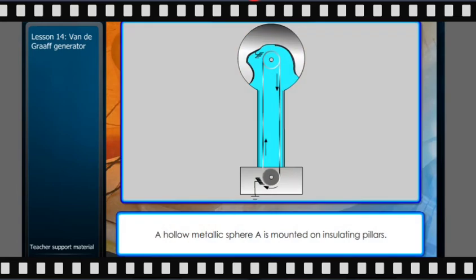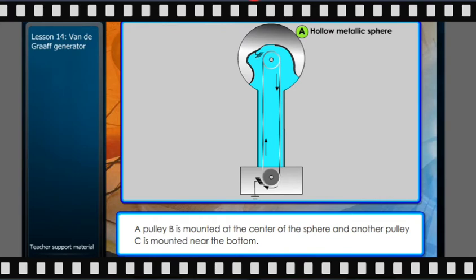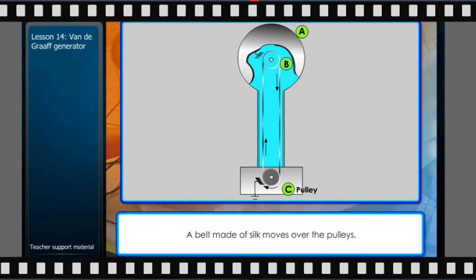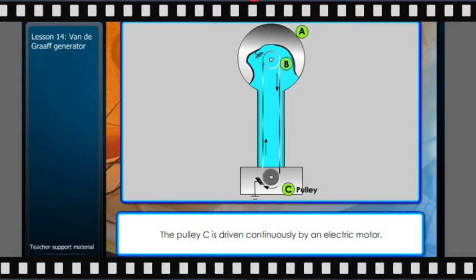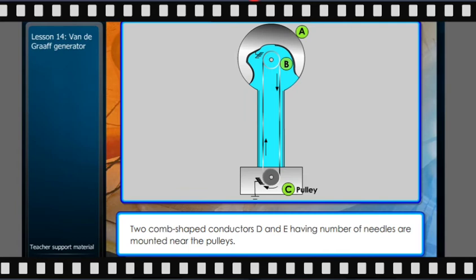A hollow metallic sphere A is mounted on insulating pillars. A pulley B is mounted at the center of the sphere and another pulley C is mounted near the bottom. A belt made of silk moves over the pulleys. The pulley C is driven continuously by an electric motor.